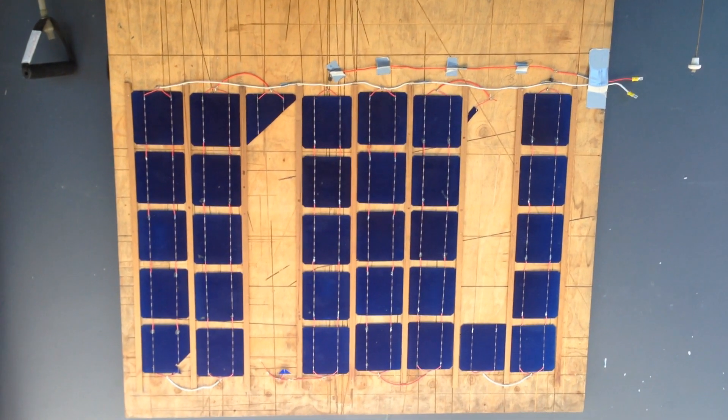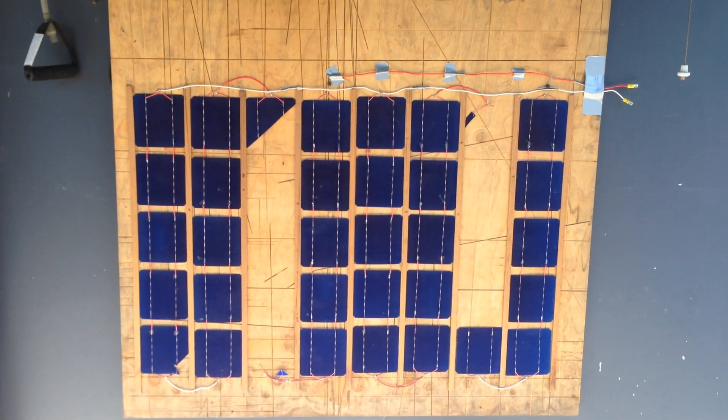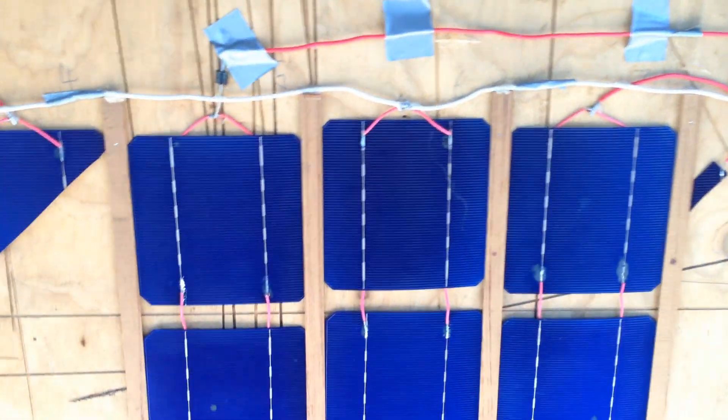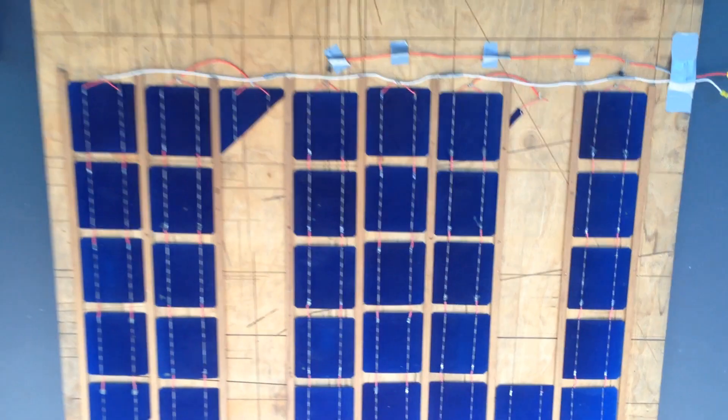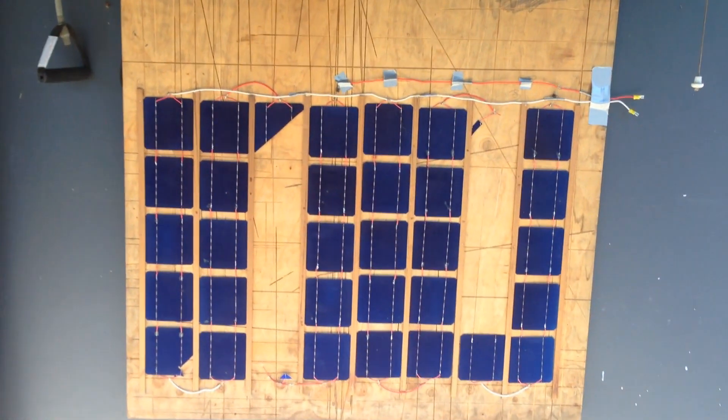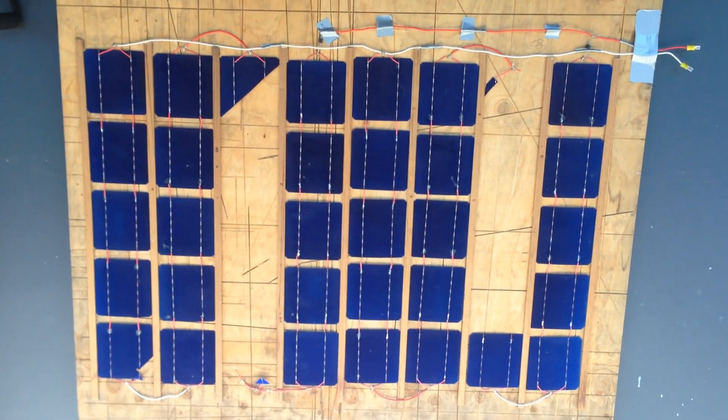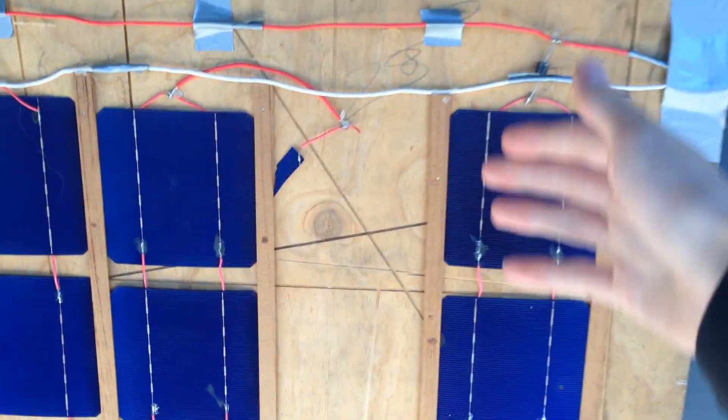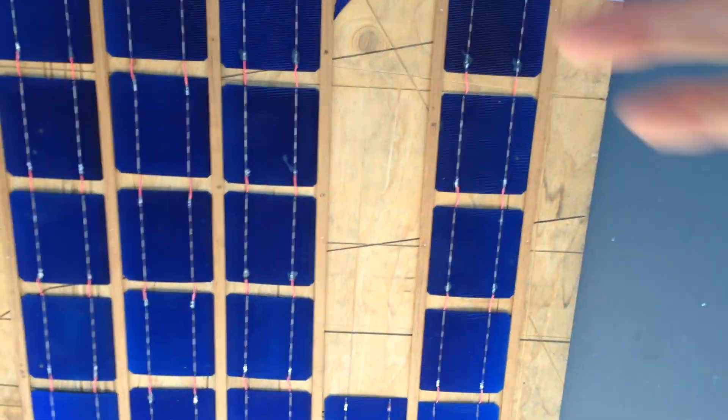So you might have seen in the video intro or the channel trailer that I've put together this do-it-yourself solar panel out of 40 of these solar cells. Initially it worked really well. I was able to get around 30 watts off it, which isn't bad really. But sadly, quite recently there was a fair bit of wind.